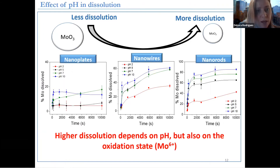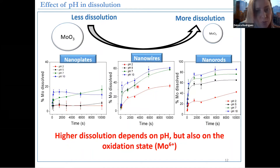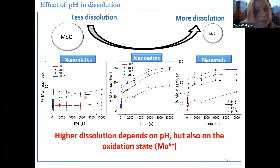When we look further at the effect of pH on dissolution, which plays a very important role, we can see that less dissolution is observed again on the nanoplates, nanowires are second, and the nanorods are third with the most dissolution. The highest the pH, the more dissolution you observe, and the lowest the pH, the least. And we could actually link this dissolution based on the oxidation state — nanoplates are oxidation state +5, while the nanorods are +6. So oxidation state +5 tends to dissolve less than oxidation state +6.